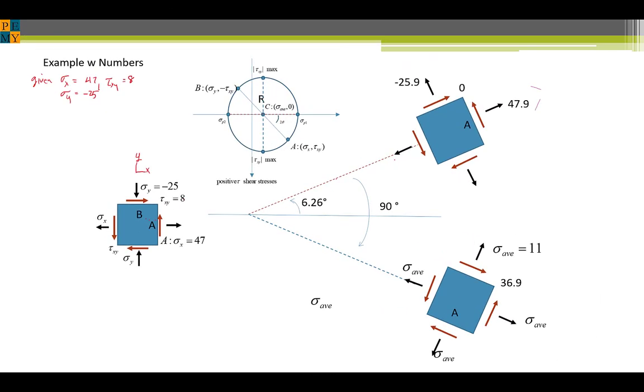Here is a Mohr's Circle example with numbers. The first thing to do is to plot the three points. So we do that by getting the x and y coordinate of the center and the two points a and b which correspond to the faces a and b on the stress element. So sigma average comma zero is the coordinate for the center. Sigma average is the stress in the x direction plus the stress in the y direction. The y direction is compressive so its stress is negative. Averaging that is 47 plus a negative 25 divided by 2. That's 11 and 0. So this point can be plotted.